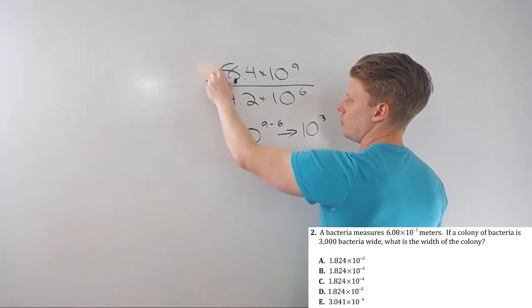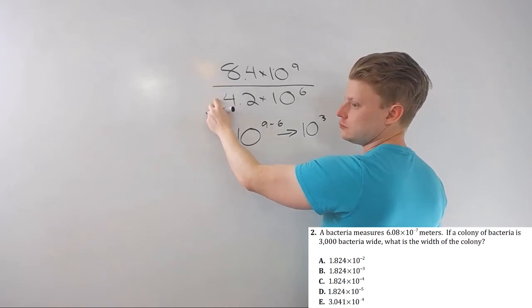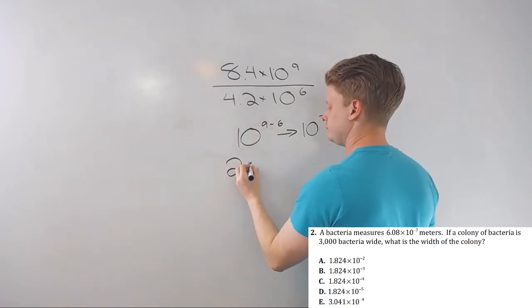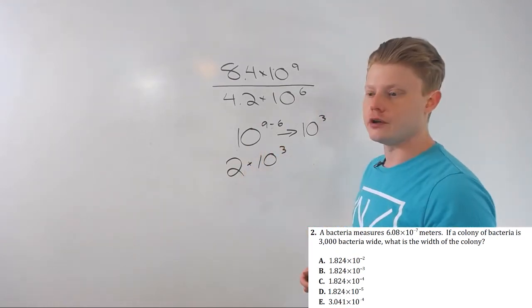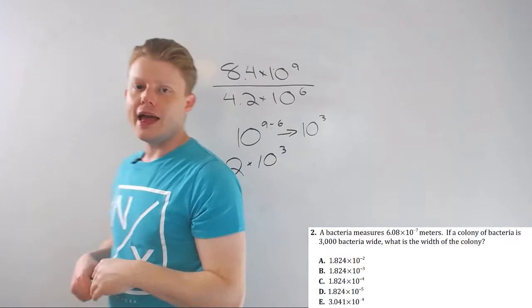8.4 divided by 4.2 is 2. Check that in your calculator. 2 times 10 to the third would be your answer. Relatively straightforward, right?